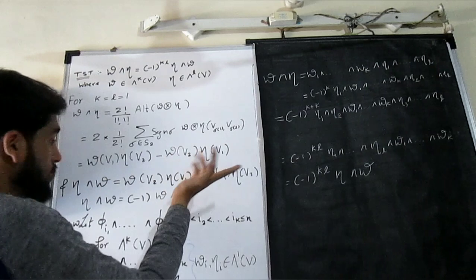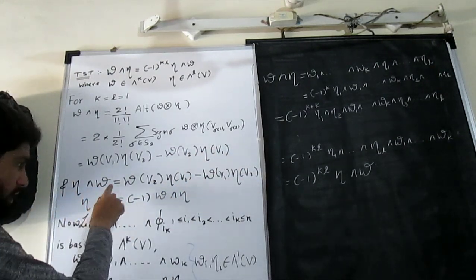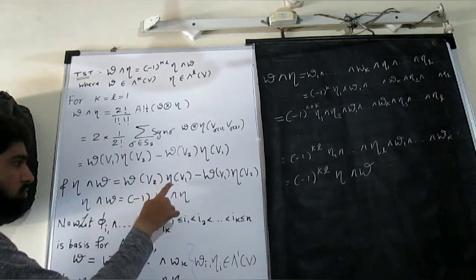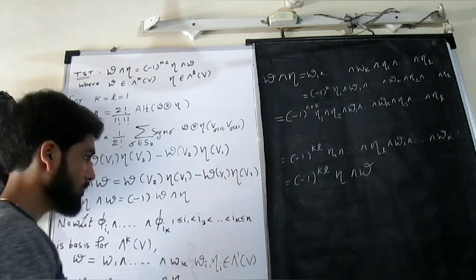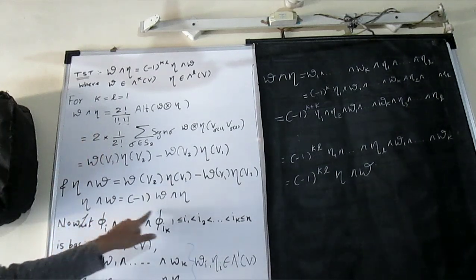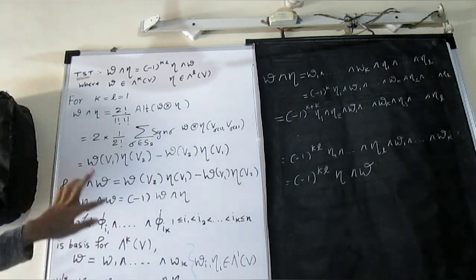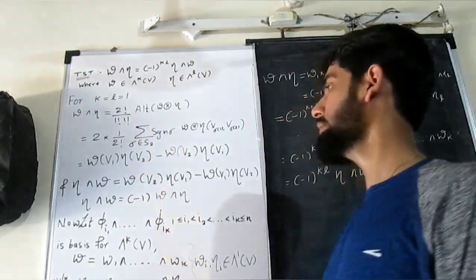That means we have to swap this two and this, so ultimately what you get is eta wedge product with omega is same as omega v2, eta v1 minus omega v1, eta v2, which is nothing but exactly opposite in the sign of what we had. So we get both are opposite in the sign, so for k and l equal to 1 we got the proof.